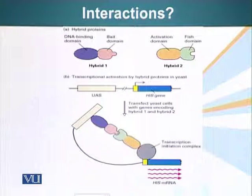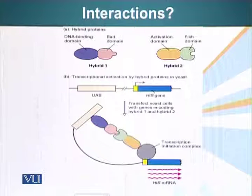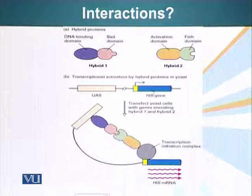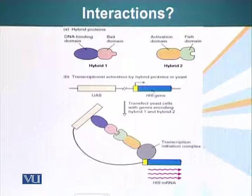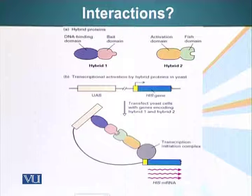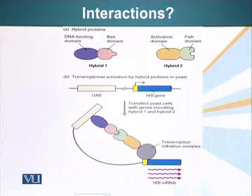The other issue we want to address is: how do we know that two proteins interact? GRB2, for example, interacts with SOS. How do we know? A simple experiment is called the yeast two-hybrid system, or fish-bait experiment. Proteins which act as transcription factors have two domains: one domain binds the DNA, the other domain recruits the RNA polymerase — two domains. So if we are able to split these two domains and attach them to two different molecules, we can study this.